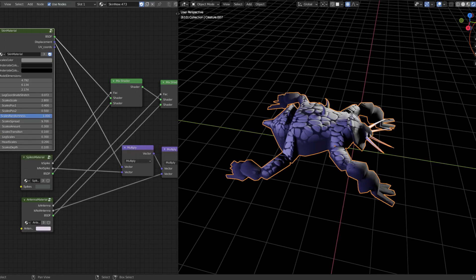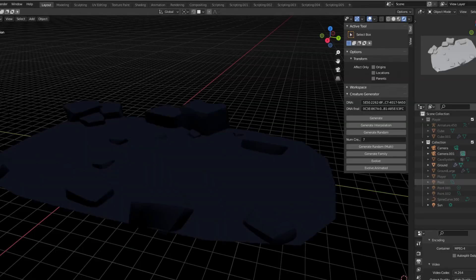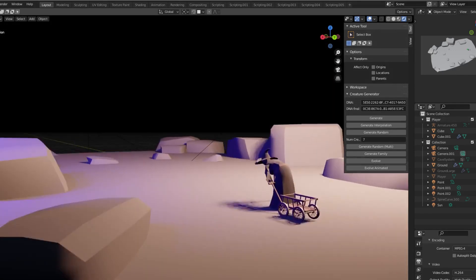Whenever I want to use these creatures in a game, I simply bake these materials to texture files. At this point we're done with the mesh generation, so let's try it out and hit that generate button a few times.